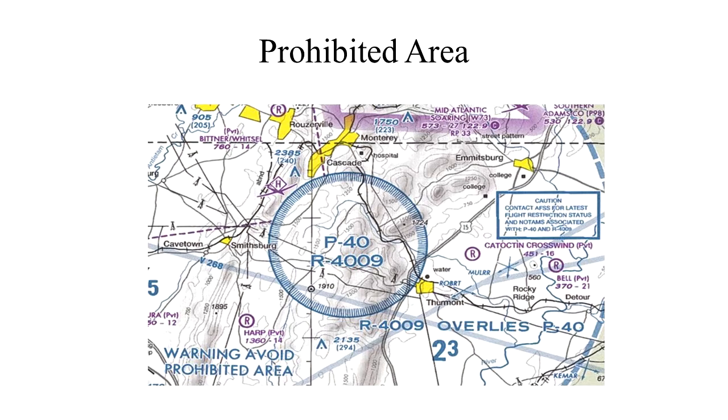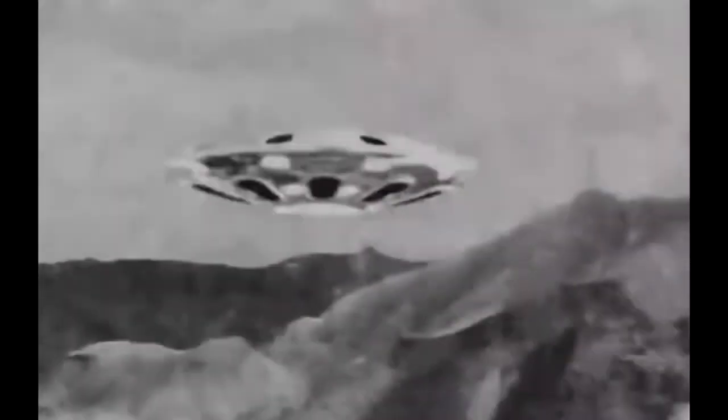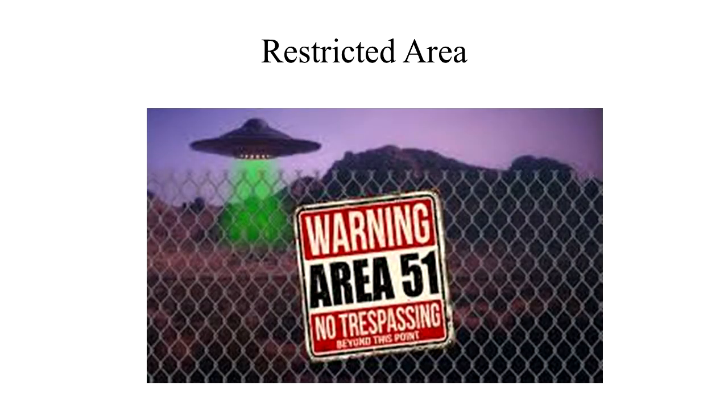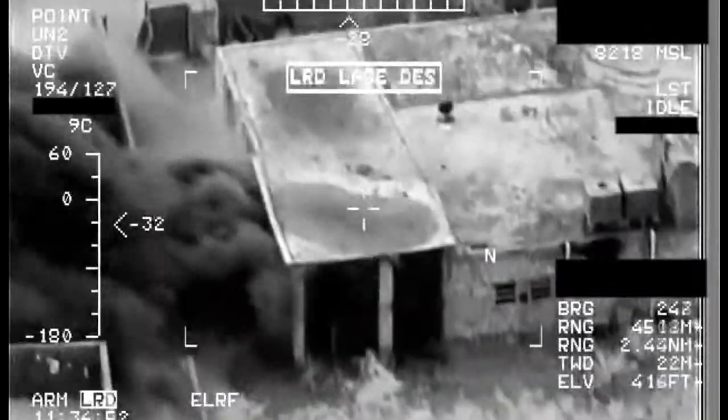Camp David and the National Mall are prohibited areas. Restricted areas are areas where operations are hazardous to non-participating aircraft. Activities within these areas must be confined because of their nature. Restricted areas denote the existence of unusual, often invisible, hazards to aircraft like artillery firing, aerial gunnery, or guided missiles. Penetration of restricted areas without authorization from the using or controlling agency may be extremely hazardous to the aircraft.